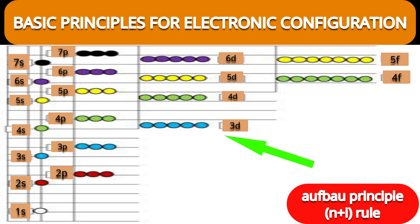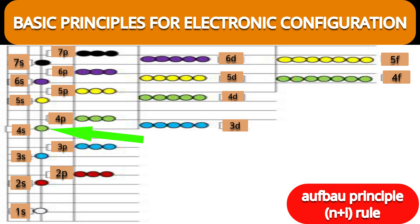Therefore, after argon (atomic number 18, where electrons fill the 3p orbital), the 19th electron in potassium enters the 4s orbital, and the 20th electron in calcium also enters the 4s orbital. So after 3p, not 3d, it is 4s. The n plus l rule clearly explains this arrangement.